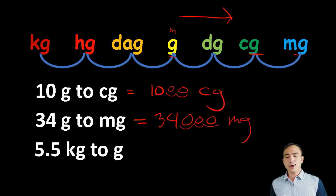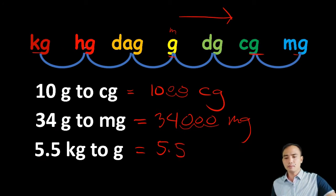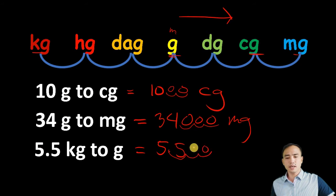Next: 5.5 kilograms to grams. From kilogram to gram is three steps away going to the right. We move the decimal point three places to the right and put zeros to make it 5,500 grams.